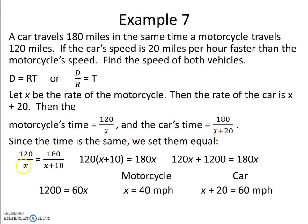We have 120 divided by x, which is our distance divided by rate, equals 180 divided by x plus 10, which is the distance divided by the rate. We can set them equal because the time is the same.